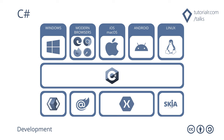C Sharp development can target Windows, modern browsers, iOS, macOS, Android, and Linux using Universal Windows Platform and WinUI on Windows, Blazor WebAssembly in modern browsers, Xamarin on iOS, macOS, or Android, and Skia on Linux.